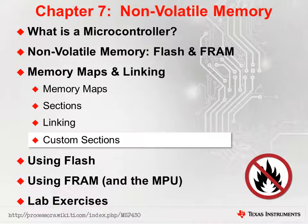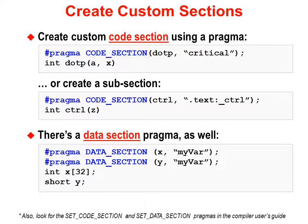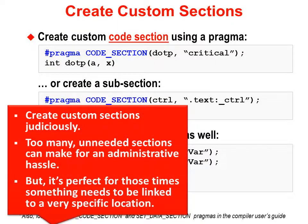The compiler only creates those few sections as defined in the compiler user's guide, but you can create your own custom-named sections. The key is to use either the code or data section pragmas. By creating your own unique sections, you can link information to very specific locations in memory, as opposed to it just going into generic predefined sections. We highly recommend you use this feature judiciously — don't create custom sections unless necessary, as each one you create will need to be linked properly and can cause an administrative hassle.